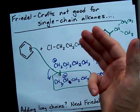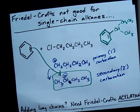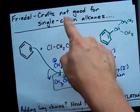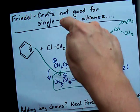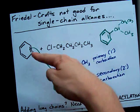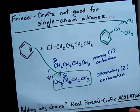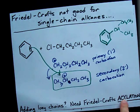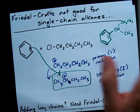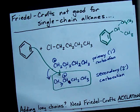You can't use Friedel-Crafts alkylation when you want a long straight chain attached to the benzene. You're going to have to use something called Friedel-Crafts acylation, which I'll do another video about some other day. Good luck.